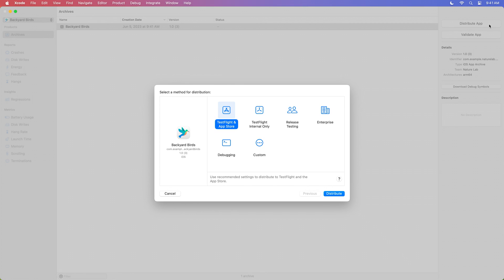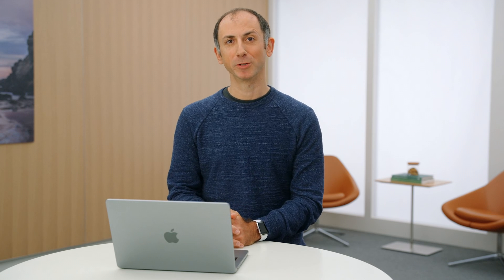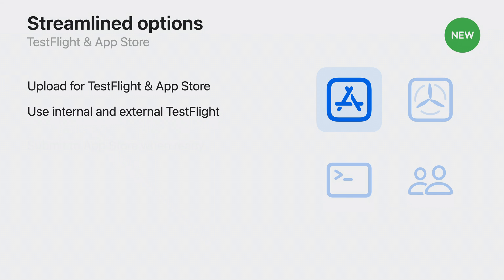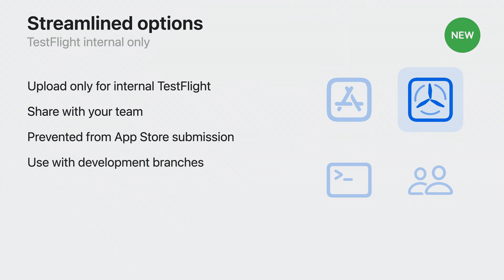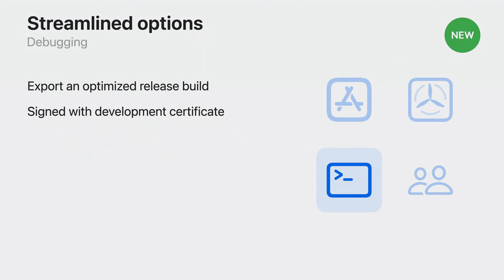By choosing one of these options, you can upload or export your app easily with just one click. You can use the TestFlight and App Store option, which gives you the full functionality of TestFlight and the ability to submit to the App Store. Or you can use the new TestFlight Internal Only option — this kind of build can be shared with your team, but can never be submitted to the App Store. This is perfect for getting feedback while you're iterating on a development branch. You can also use the Debugging option to export an optimized build that can be installed on your team's registered devices.